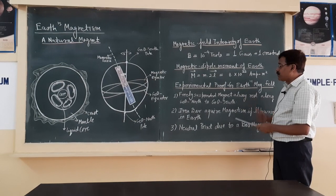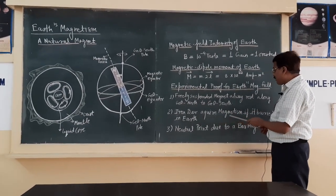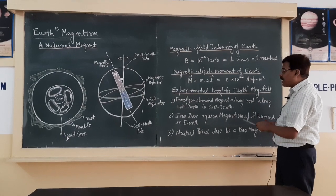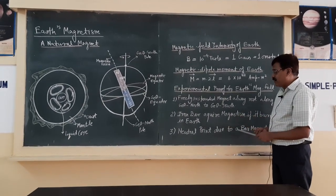So this is a very simple proof for earth magnetism. Another proof is if you deeply bury an iron bar inside the earth system, after some time it acquires a magnetic field.